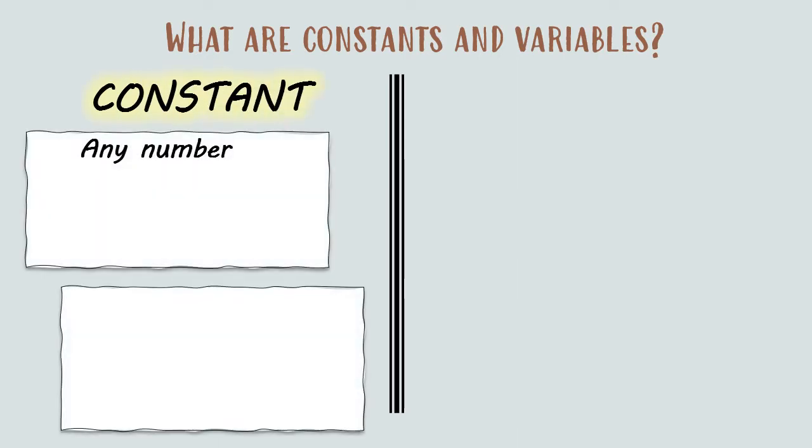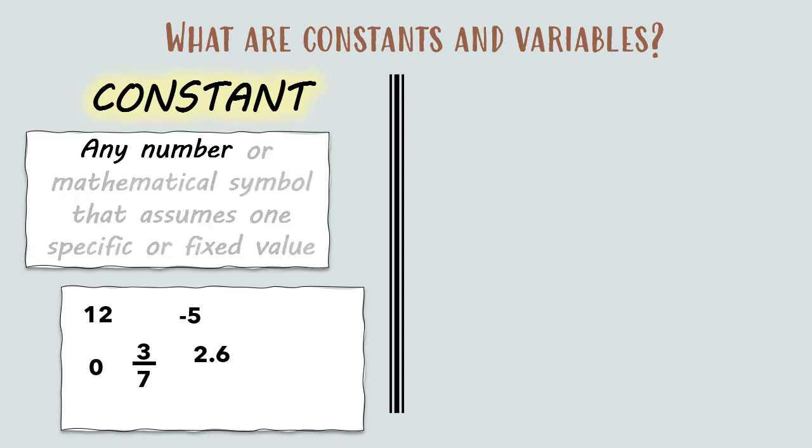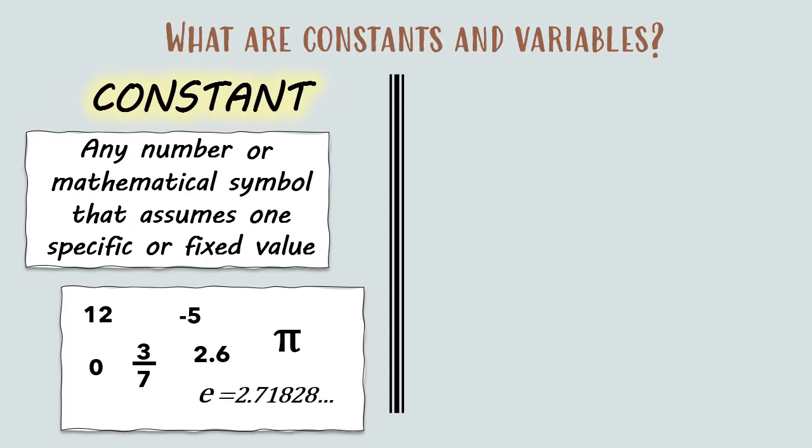A constant can be any number, a whole number, an integer, a decimal, or even a fraction. A constant can also be a mathematical symbol that assumes one specific or fixed value, such as the constant pi and the Euler number e.